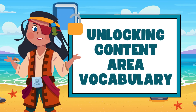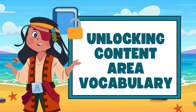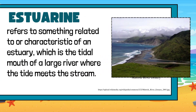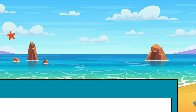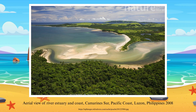Unlocking Content Area Vocabulary. Estuarine: refers to something related to or characteristic of an estuary, which is the tidal mouth of a large river where the tide meets the stream. Shown is an aerial view of a river estuary and coast in Camarines Sur, Pacific Coast, Luzon, Philippines, 2008.